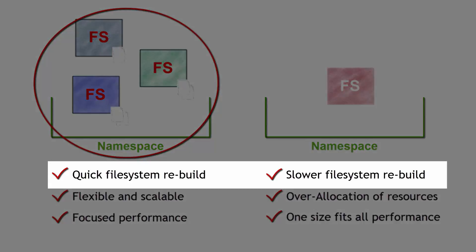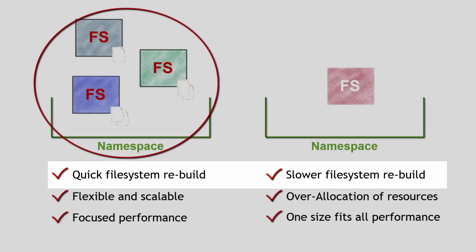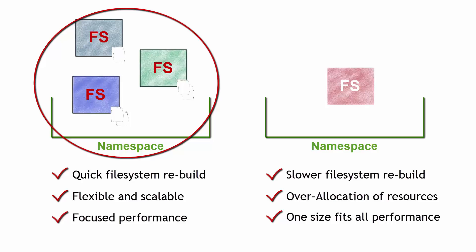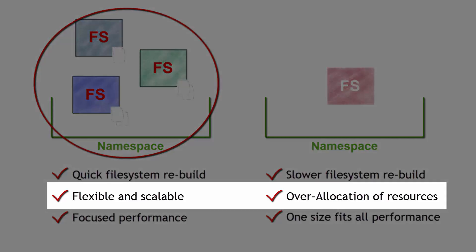Consider the pure logic here: if I have one file system that has grown to be humongous and I have to rebuild it, which is better — rebuilding something humongous, or rebuilding small individual file systems within that same namespace? At the end of the day the network attached storage produces the same result, but multiple file systems means quick reprovisioning — it's more flexible and scalable.